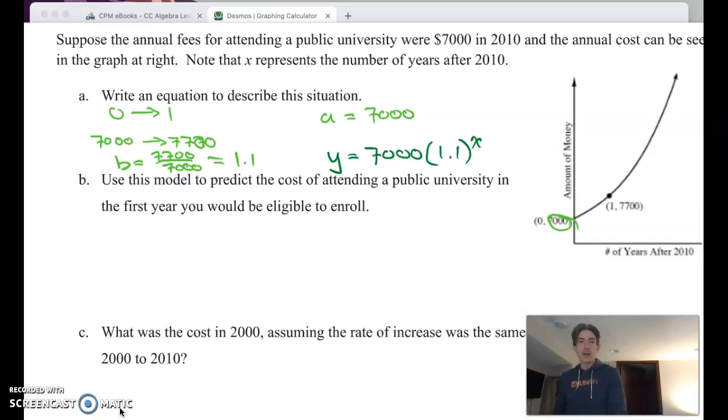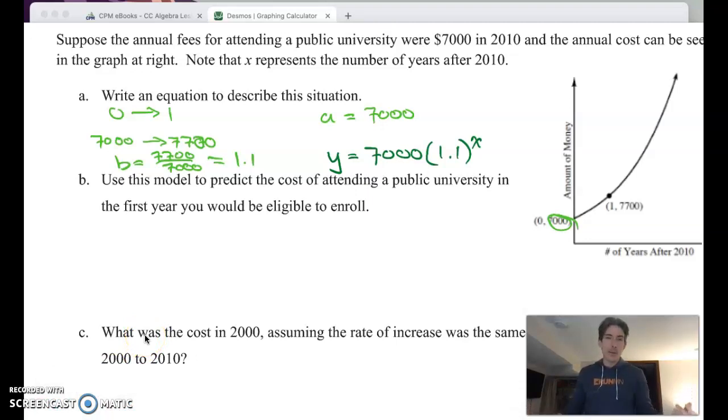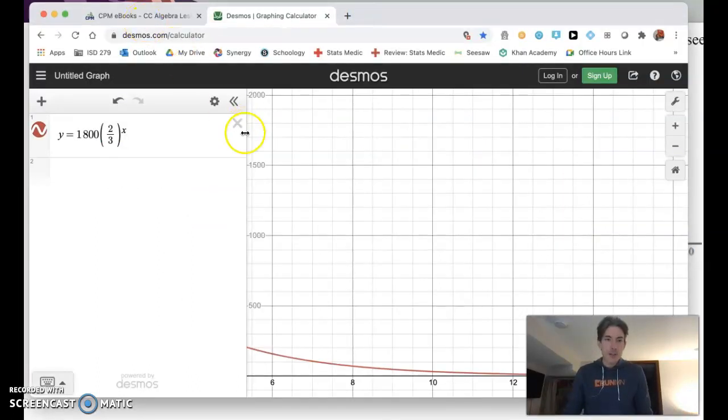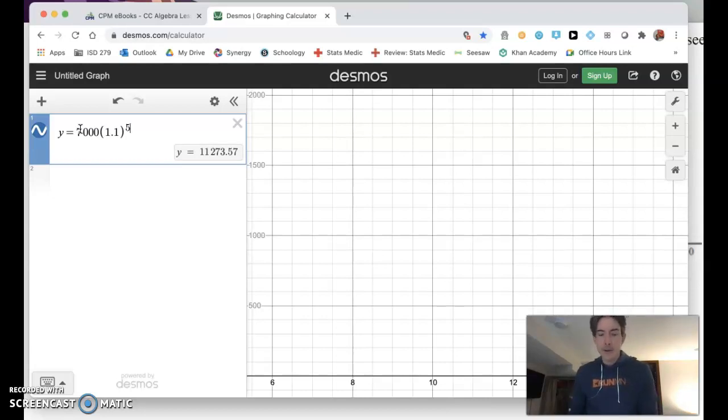Use this model to predict the cost of attending a public university in the first year you would be eligible to enroll. When are you going to be eligible? That's different for all of us. I'm going to go back to Desmos and have Desmos do this work for me. 7,000 times 1.1 to the, if you're eligible to enroll in five years, then you're going to throw a five in there. And what's that cost going to be? To the nearest penny, $11,273.57. But if you're eligible in four years, then there's your cost. If you're eligible in three years, but if you're not eligible for six years, oh, yikes. All of those things have different levels of cost based on our model. The quicker we can get to college, maybe the better in terms of our pocketbook.